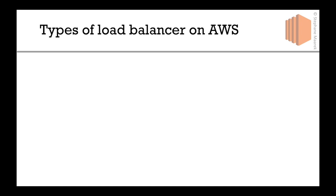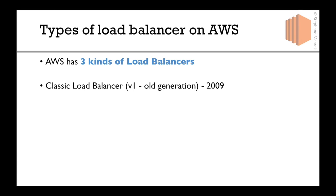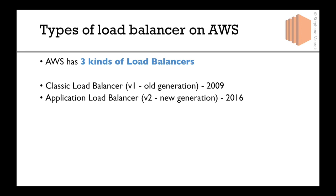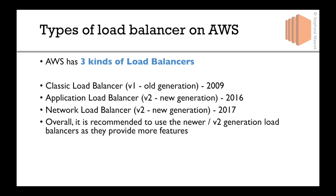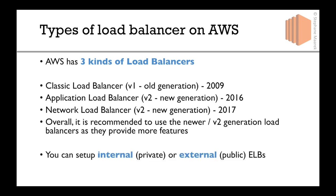Now, what are the types of load balancers on AWS? AWS has three kinds. Number one is the classic load balancer — it's V1, the old generation, from 2009. Number two is the application load balancer, V2, the newer generation from 2016. And finally, there's the network load balancer, even more recent from 2017 — also V2, the newer generation. Overall, we're going to use the newer V2 generation load balancers as they are more recommended and provide more features. But in this course, we'll see all of them: the classic, the application, and the network load balancer.